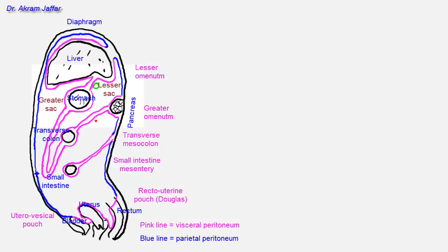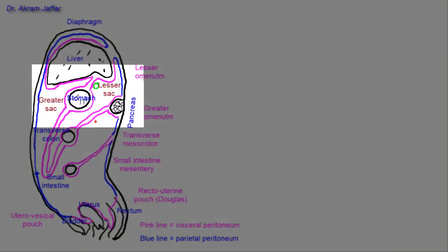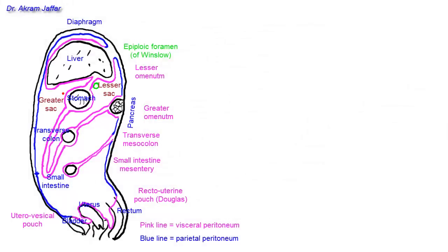This opening is called the epiploic foramen, or foramen of Winslow. It represents the only communication between the greater sac and the lesser sac. The arrow here passes from the greater sac into the lesser sac through the epiploic foramen — this is the only natural communication between the two.